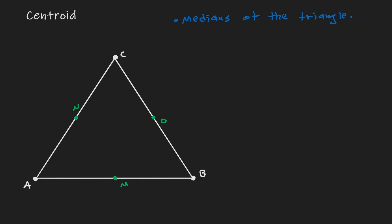Let's remind ourselves what a median is. A median is a line segment that joins the vertex to the midpoint of the opposite side. Point N is the midpoint between A and C, point O is the midpoint between C and B, and point M is the midpoint between A and B.